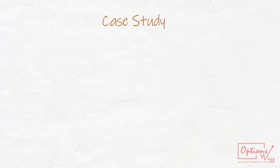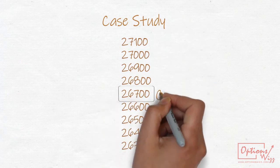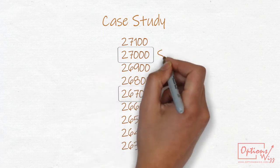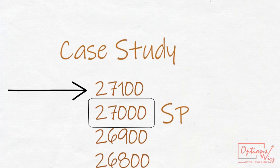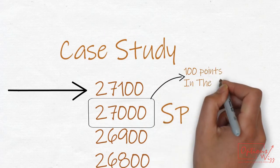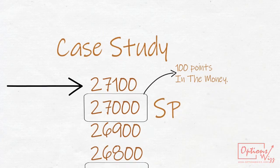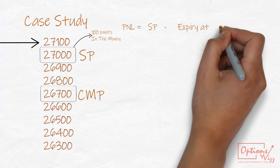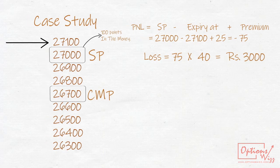Let's do the case study. Case 1: Bank Nifty expires at 27,100. 27,000 call will be 100 points in the money and will have a premium value of rupees 100. P&L in this case will be negative 75 points. How much will Gorish lose in this case? Loss will be rupees 3,000.